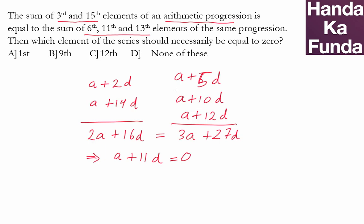Now what is the question asking? Then which element of the series should necessarily be equal to 0? What is A plus 11D? A plus 11D is essentially the 12th term. So we can say that for a fact, 12th term should necessarily be equal to 0, which is given to us as option C.